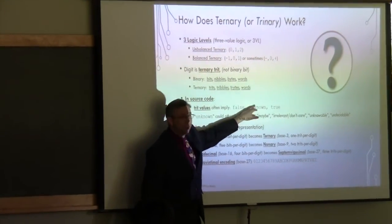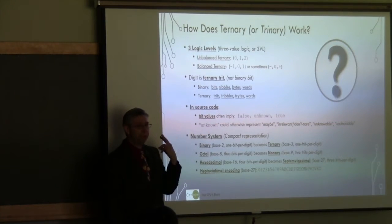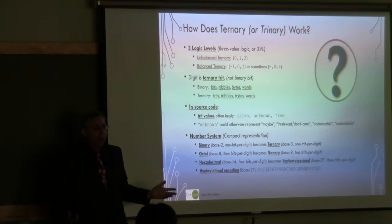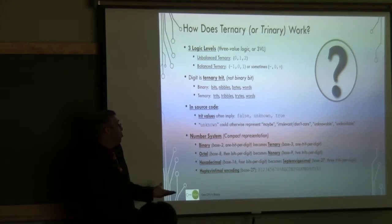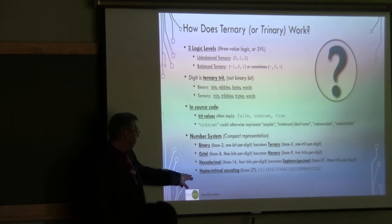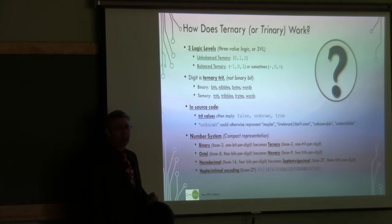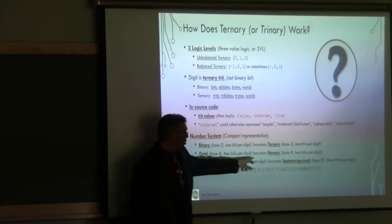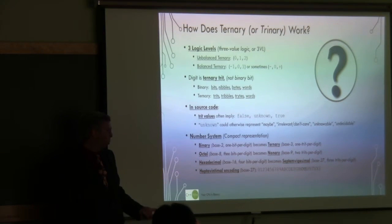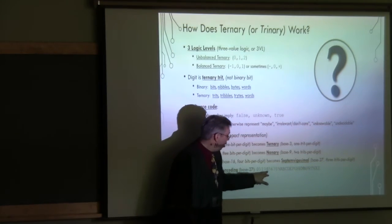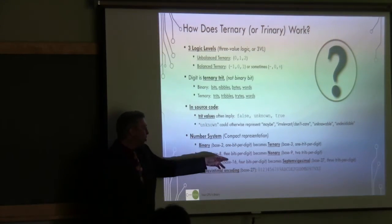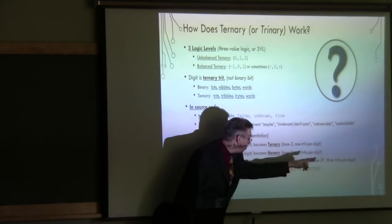We have false, true, and 'unknown' — the third state can represent: indeterminate, maybe, who knows, don't care, not configured, it depends. It's arbitrary. If we choose to give meaning to false and true, we can choose to give meaning to the third state too. For compact representation, we're not going to be base two, so not octal and hex — we're going to use nonary (base 9) and septum-vigesimal (base 27), because that's how the bit patterns will work. And there's an encoding — 27 characters covering the available letters and digits.